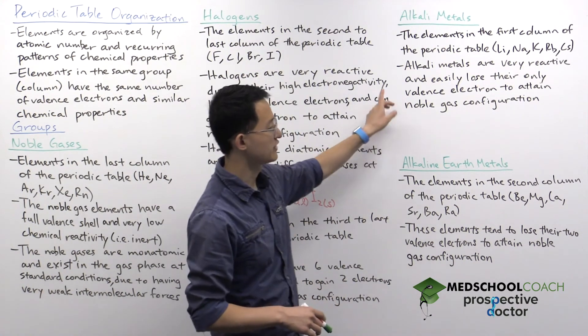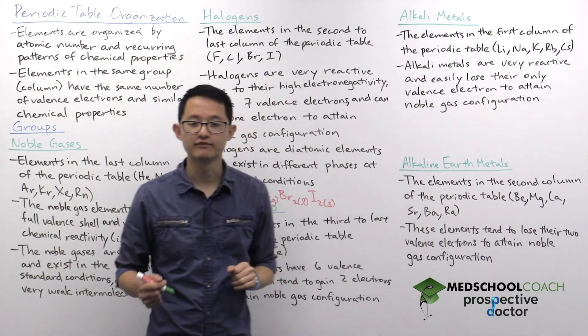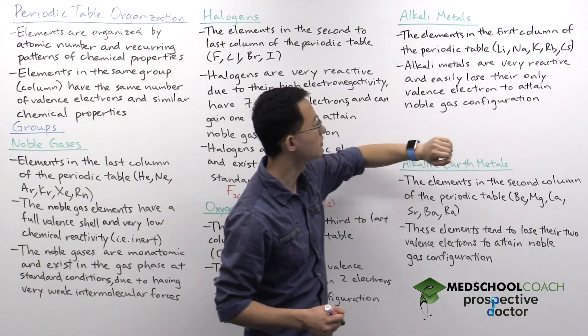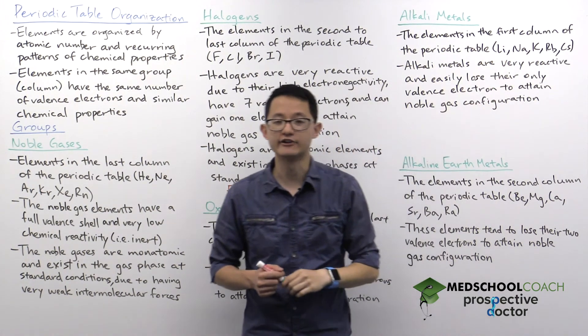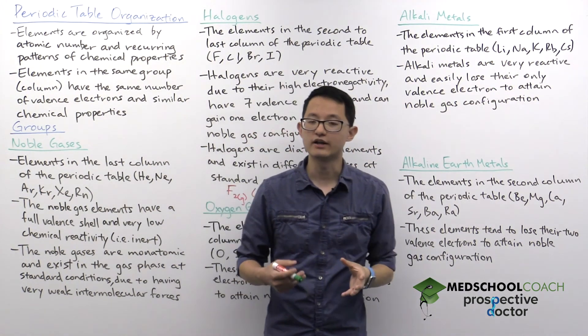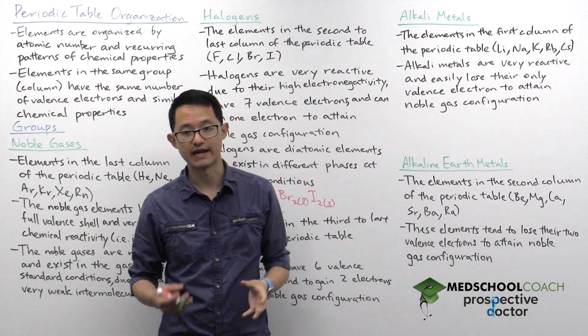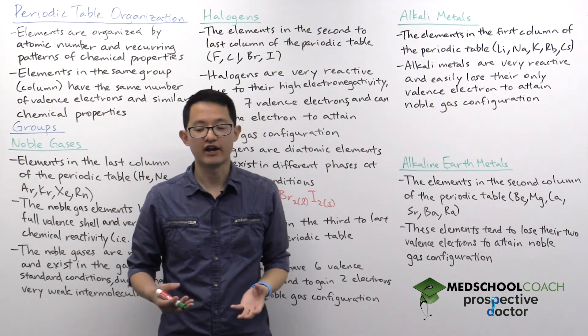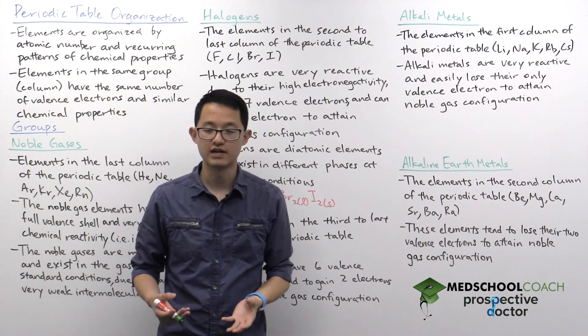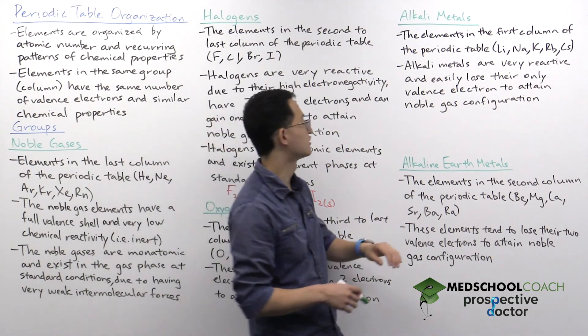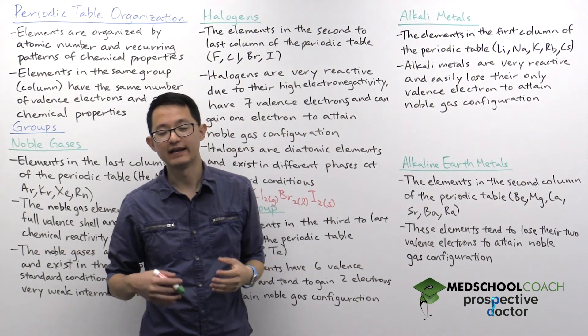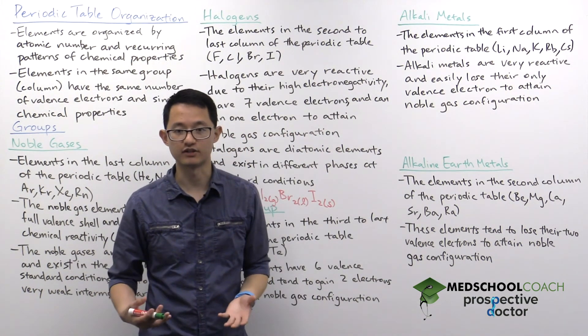Now, one thing I do want to mention about alkaline metals is you might have noticed when I said that it's the elements in the first column of the periodic table that I didn't include hydrogen in the list. The reason why I don't include hydrogen as an alkaline metal is because hydrogen does not have properties of metals. The only thing that hydrogen shares in common with the other elements in the first column of the periodic table is that it has one valence electron.